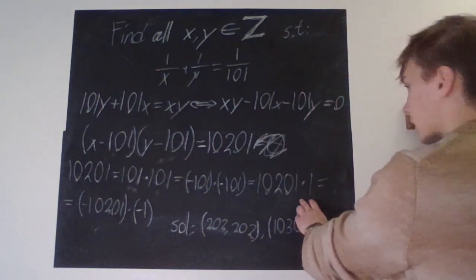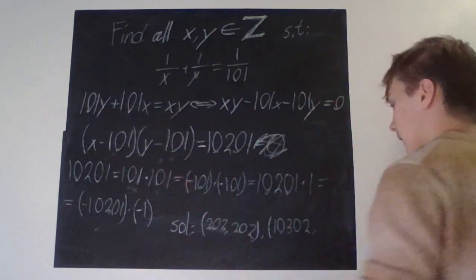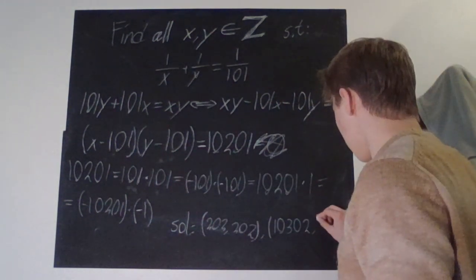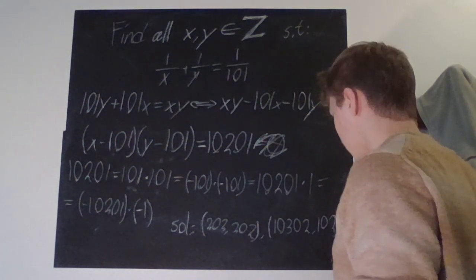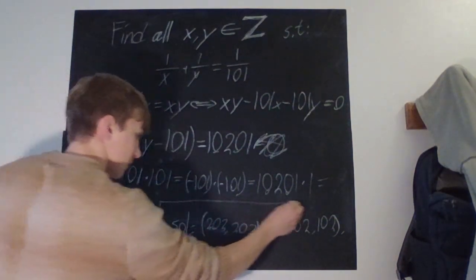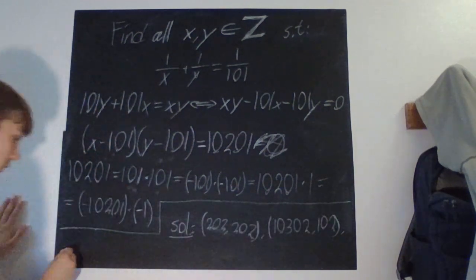And then if y - 101 is supposed to be 1, then y is just 102. And I will continue over here. So, these are all our solutions. We'll write them here.